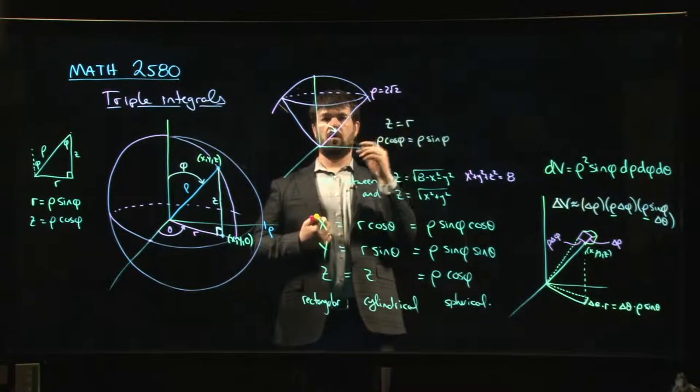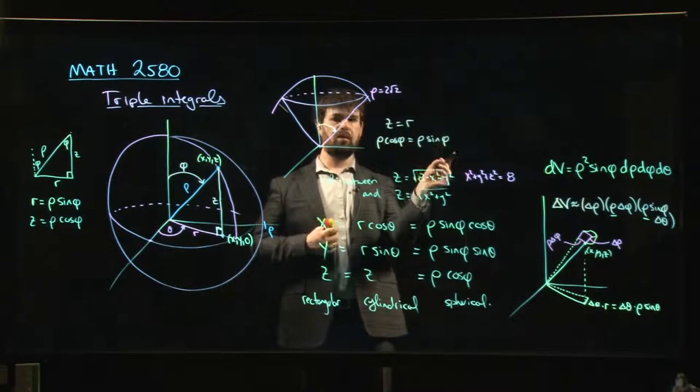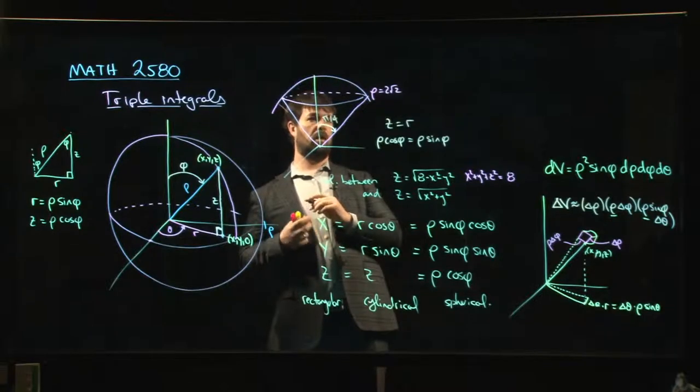Okay, well, rho is not zero except at the apex of the cone, so we could cancel the rhos. When is sine phi equal to cos phi? When phi is equal to pi over 4.